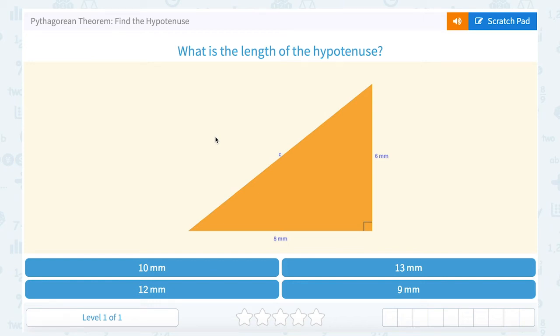We are going to take a look at the Pythagorean Theorem and how we can use it to find the hypotenuse of a triangle. Our question is, what is the length of the hypotenuse?